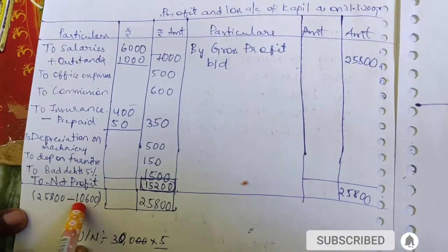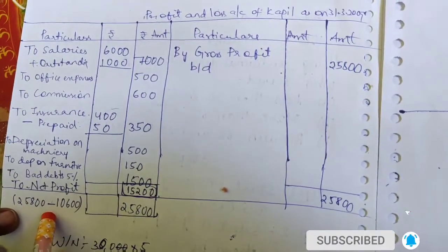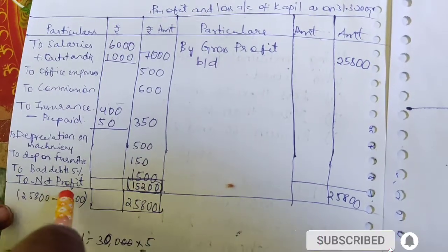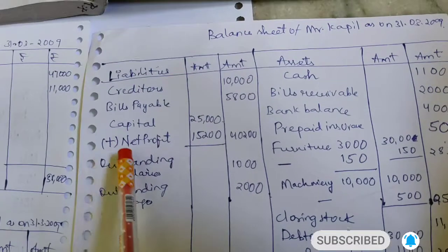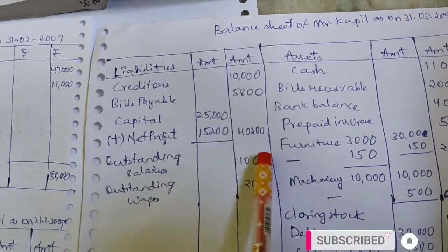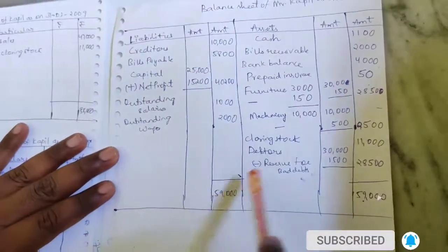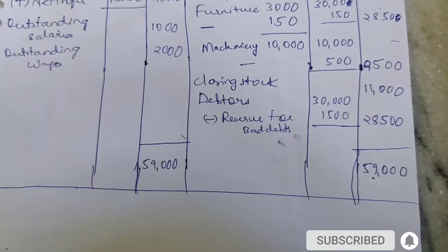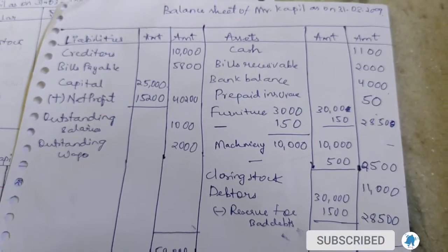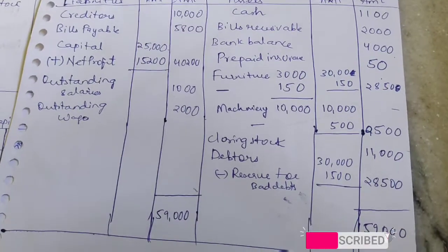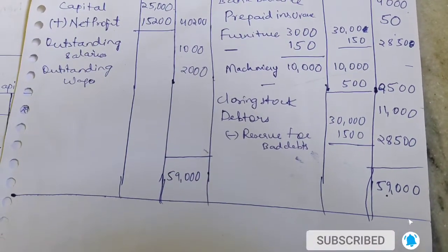The balancing amount is 10,600. The credit side total is 10,600; minus 25,800 gives 15,200 net profit. Net profit is added to capital; net loss is deducted — remember that. The total on both sides is 59,000. This is a model question for final accounts with adjustments. Do subscribe to our channel — thanks for watching!